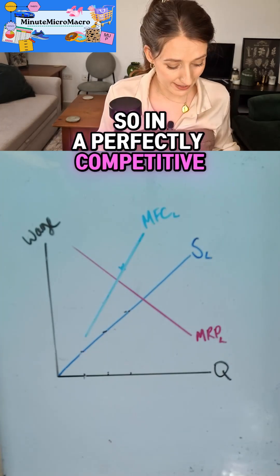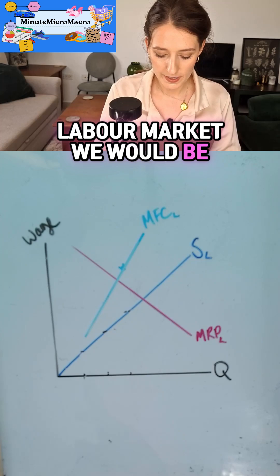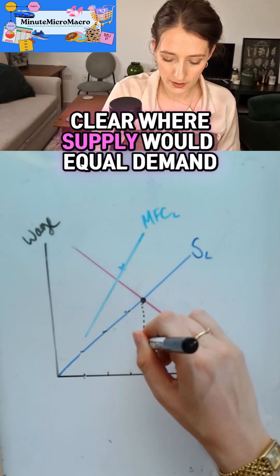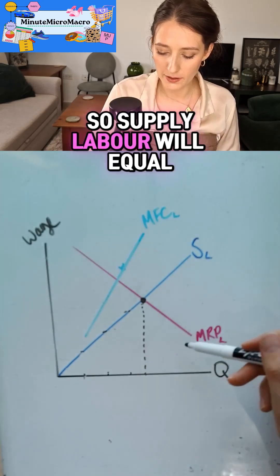So in a perfectly competitive labor market, we would be demanding workers at a wage rate where the market would clear, where supply would equal demand. So the supply of labor would equal the MRP.